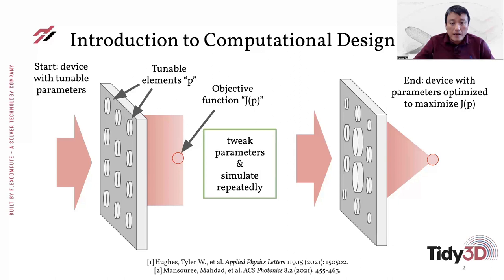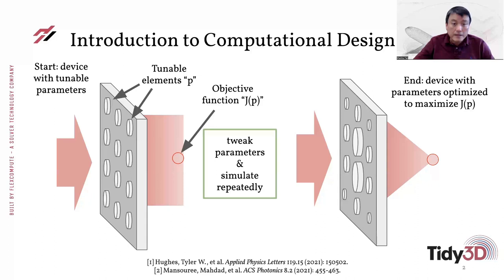As a simple illustration, consider the design of a metasurface — in this example an array of dielectric or metallic elements with varying sizes. The objective is for this device to operate as a lens, so that if you have a plane wave coming in from the left, you would like to be able to focus the incident energy to a point on the right.